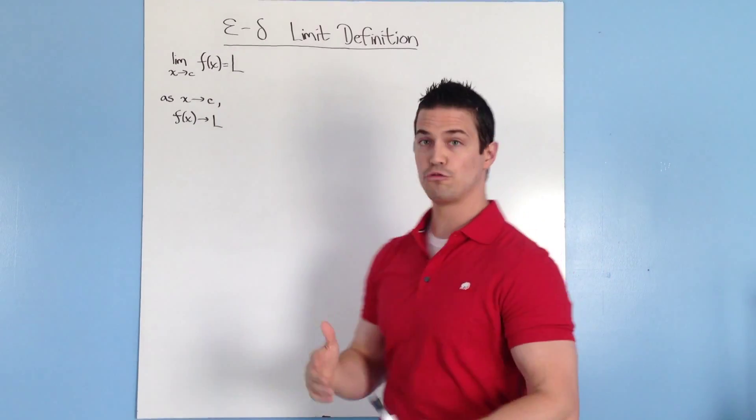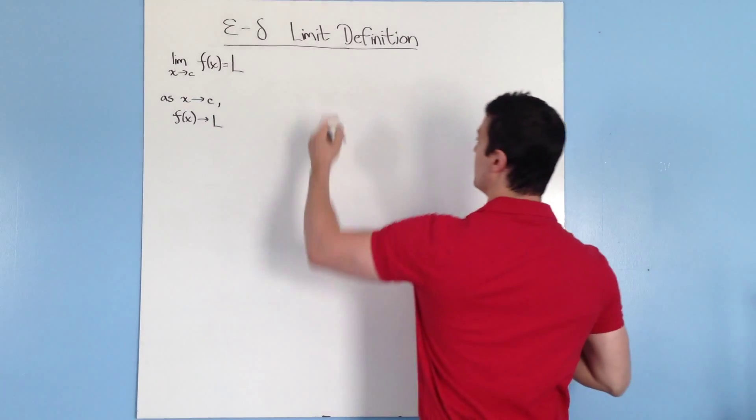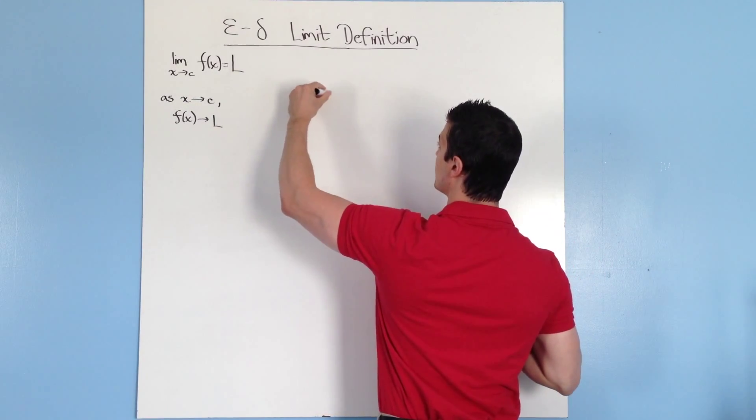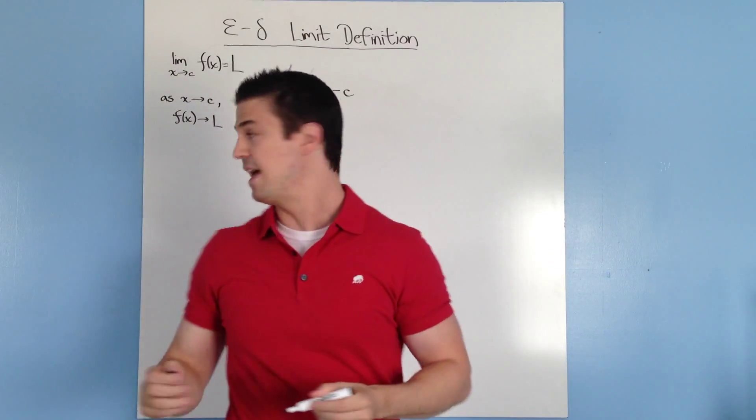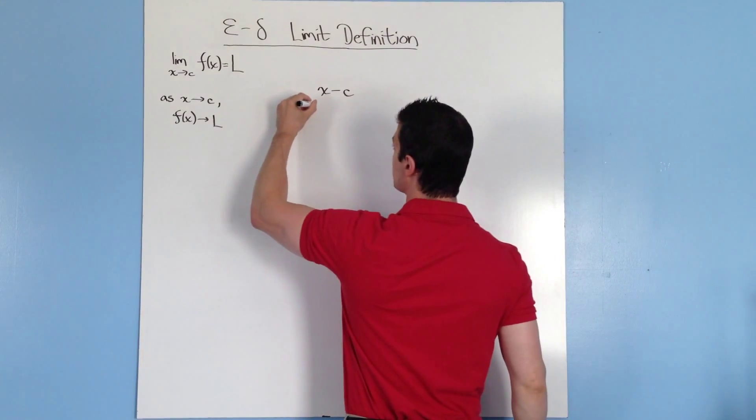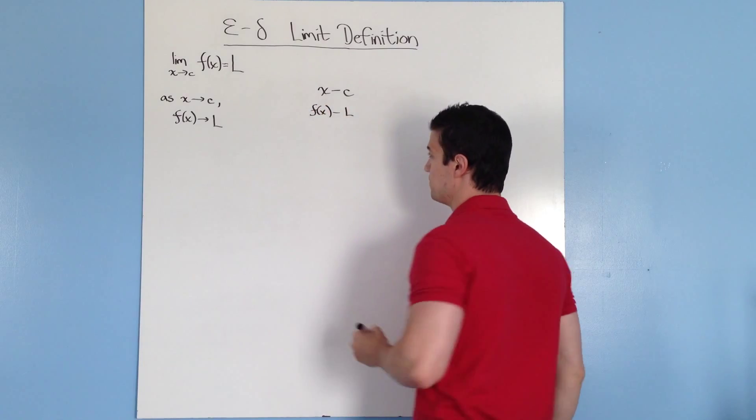So if I want to know how close two numbers are, well, that's real simple, you just subtract them. So if I want to know how close x is to c, I can just write x minus c. And then, same thing with f of x and l, I can just subtract it to f of x minus l.